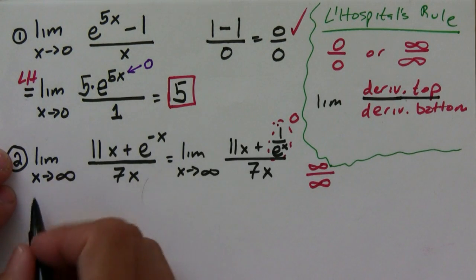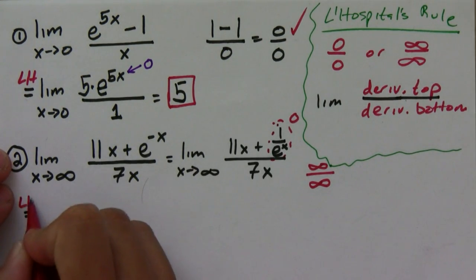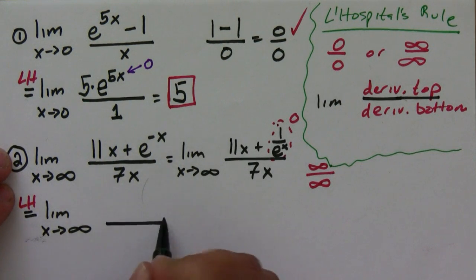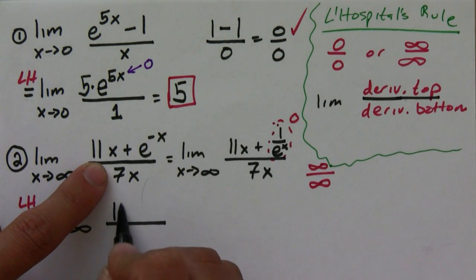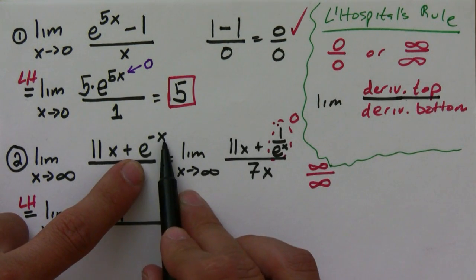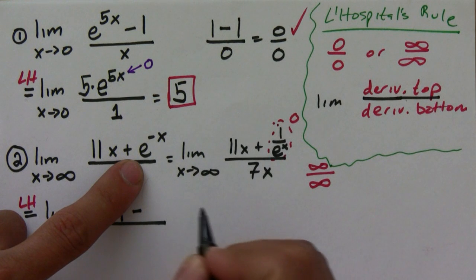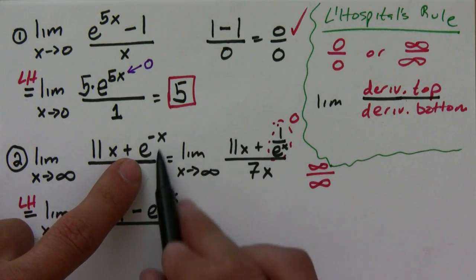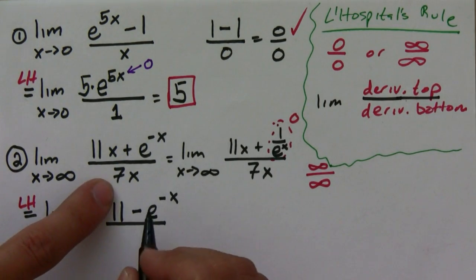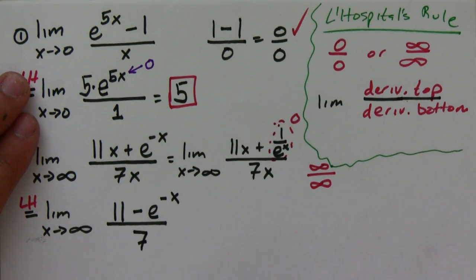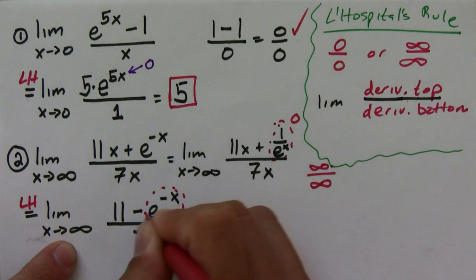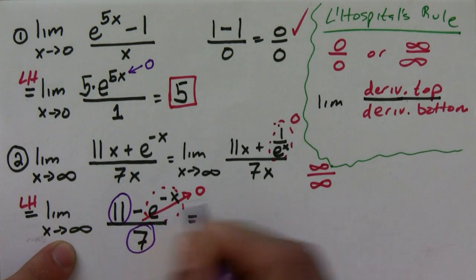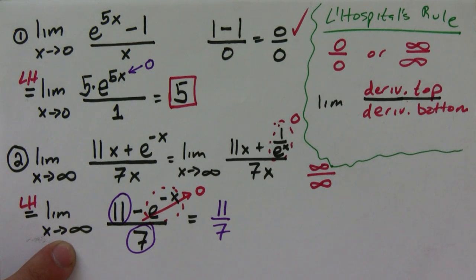So we can get the derivative of both the top and the bottom. This is equal to the limit as x goes to infinity: the derivative of 11x is just 11, and the derivative of e to the minus x is minus e to the minus x, because the derivative is itself times the derivative of the inside, which is negative 1. The derivative of the denominator is just 7. Now taking the limit as x goes to infinity, that e to the minus x term still goes towards 0, so what I'm left with is simply 11 over 7. And that's my answer.